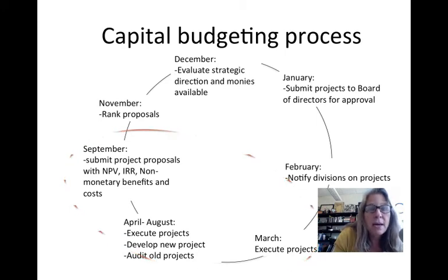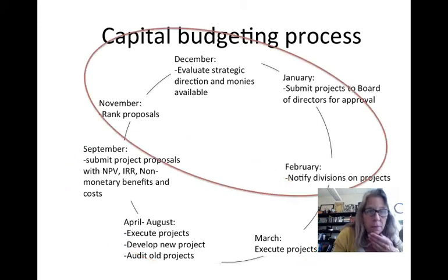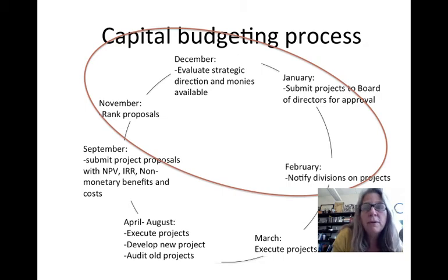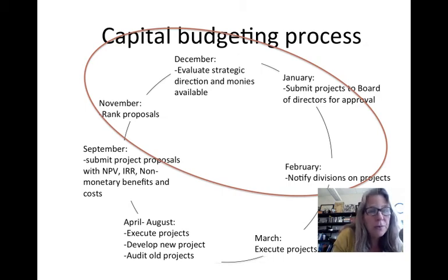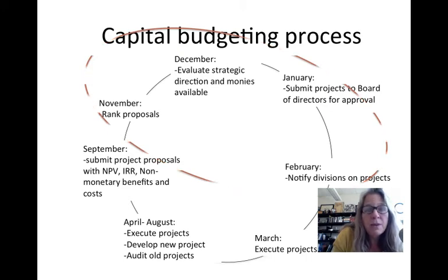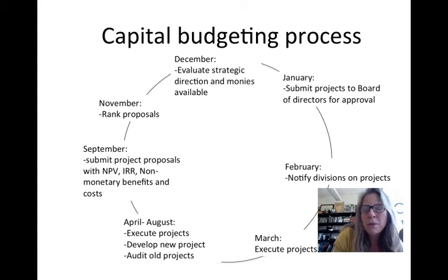As engineers, you'd be preparing proposals, executing projects, and reviewing how previous projects went. At the executive or corporate level, they gather all proposals, rank them, and approve or not approve them. That's pretty much how the capital budgeting process progresses.